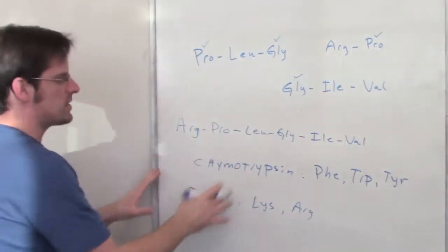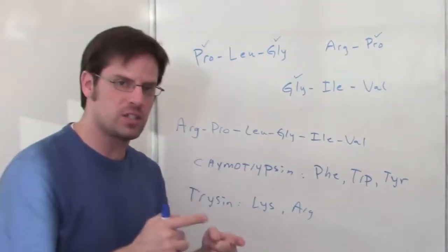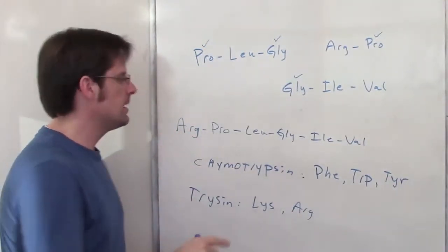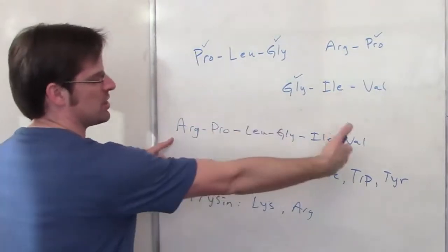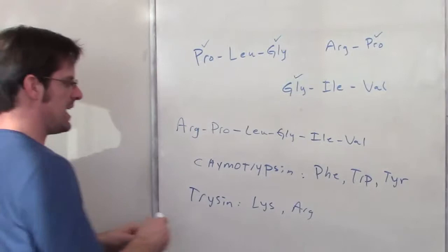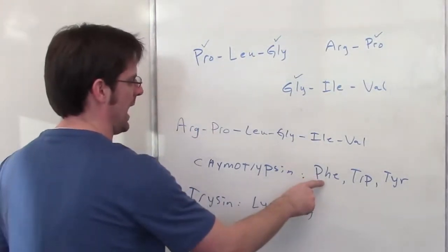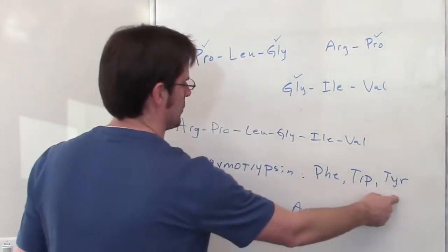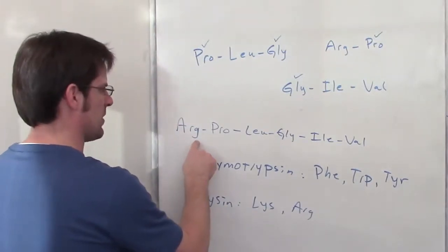These two enzymes cleave on the carboxyl side, that is on the right side, as we write this from the N-terminus to the C-terminus of the peptide. So for chymotrypsin, I'm going to be looking for any phenylalanines, tryptophans, or tyrosines. As we scan down this, do we see any of those?